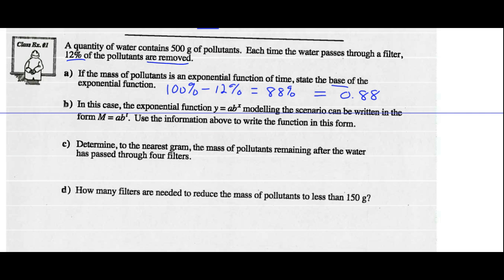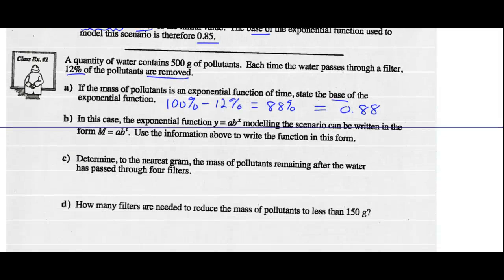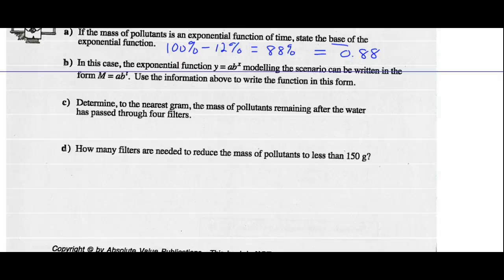In this case, the function modeling the scenario can be written as final mass equals M times 0.88 to the exponent t, where t stands for the number of filters. Determine to the nearest gram the mass of pollutants remaining after the water has passed through four filters. Final mass equals 500 grams times 0.88 to the power of 4. That's 299.84 and so on, so to the nearest gram, 300 grams of pollutants are left after four filters.